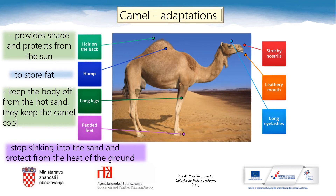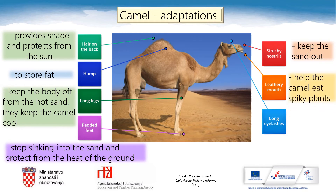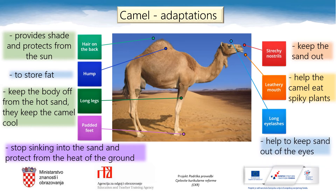And what do you think — how do stretchy nostrils, leathery mouth, and long eyelashes help the camel survive? Stretchy nostrils keep the sand out, a leathery mouth helps the camel eat spiky plants, and long eyelashes help to keep sand out of the eyes of the camel. Well done, everyone!